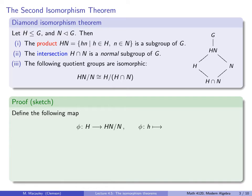Next, closure. Why is the product of two elements of this form necessarily of that form? Let's take an element h₁n₁ and multiply it by another element h₂n₂. Why is this element of the form something in H times something in N? It certainly doesn't look like it, because it's something in H times something in N times something in H times something in N. This is going to strongly depend on the fact that N is normal, and it's not obvious how to proceed.